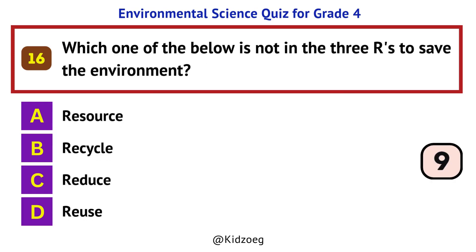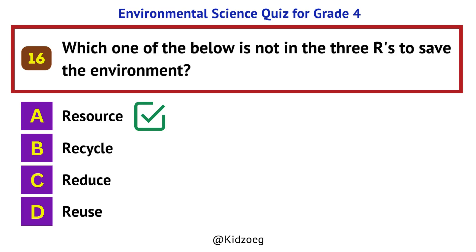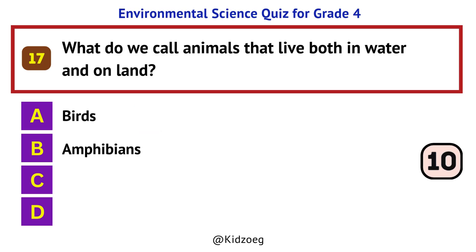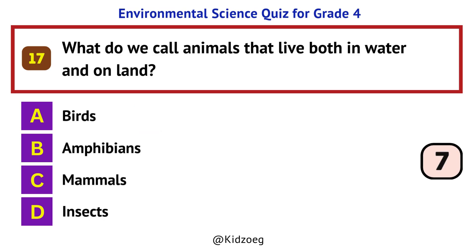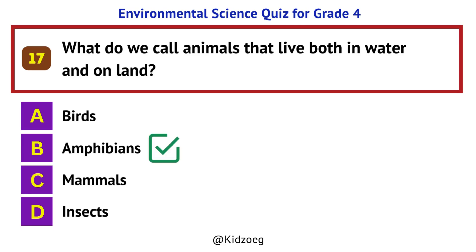Which one of the below is not in the three R's to save the environment? Resource. What do we call animals that live both in water and on land? Amphibians.